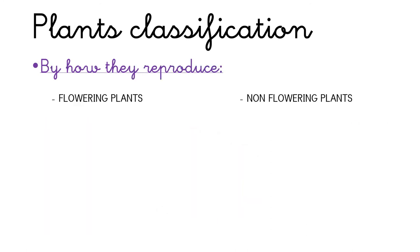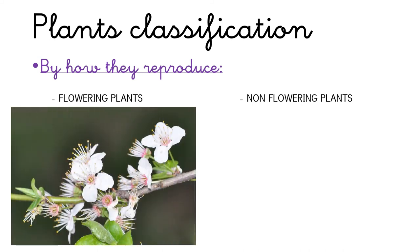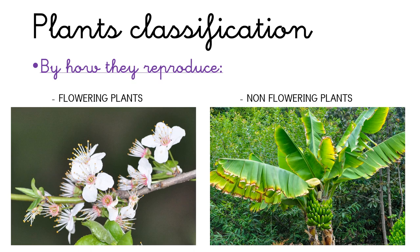The second classification is by how they reproduce. They can be flowering plants if they have flowers, and non-flowering plants if they haven't got flowers.